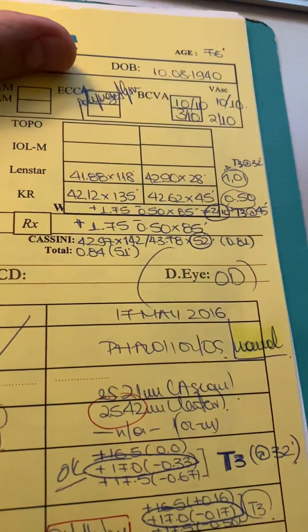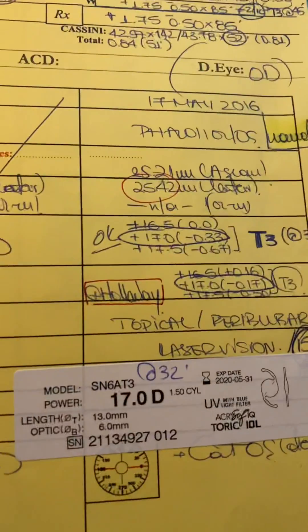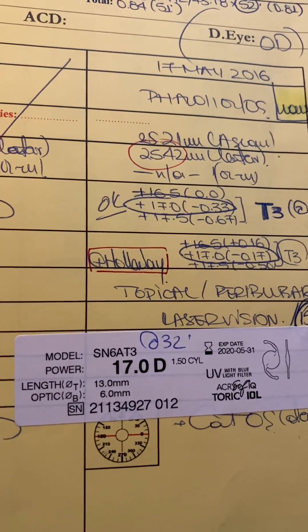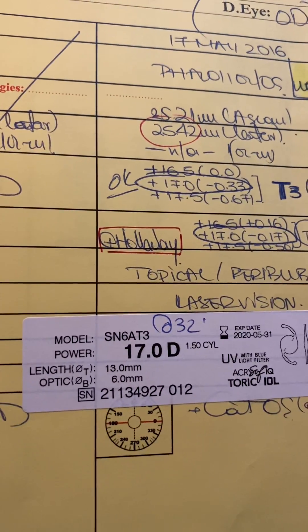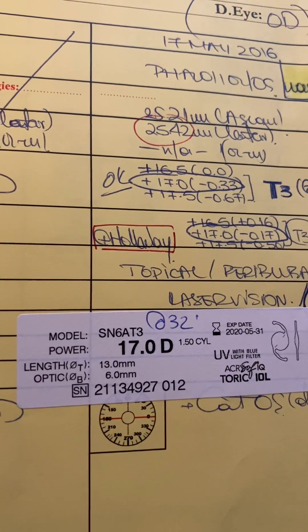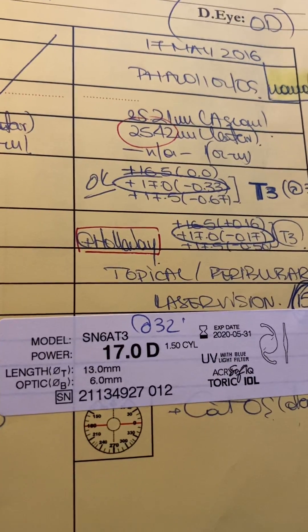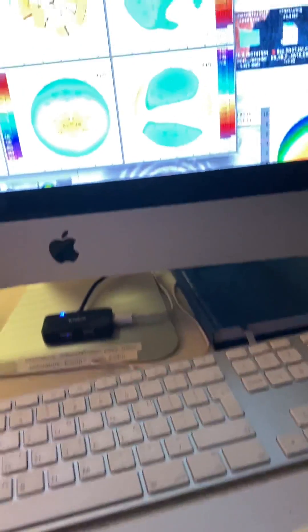This is a lady I did cataract surgery on. She's born in 1940. At the time, she was 76. Nothing really remarkable here. She was very mildly myopic. We put a 17-diopter lens with a clear cornea phaco. It was a T3, so with astigmatism.